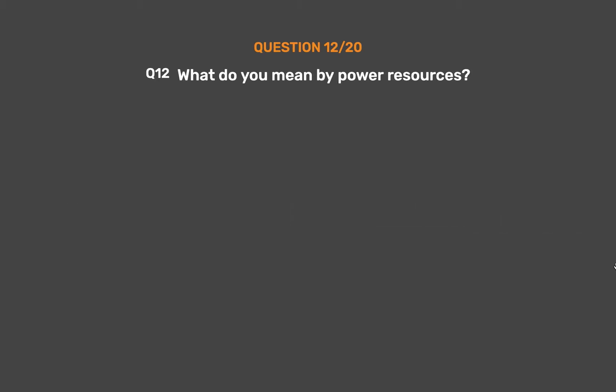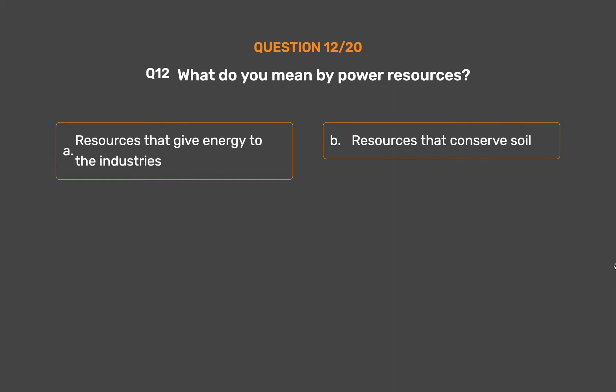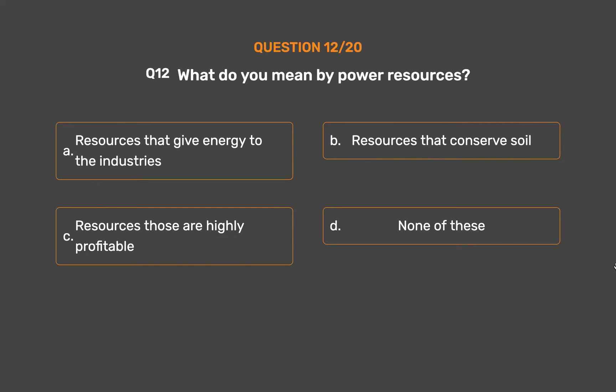Question 12: What do you mean by power resources? Option A: Resources that give energy to the industries. Option B: Resources that conserve soil. Option C: Resources that are highly profitable. Option D: None of these.